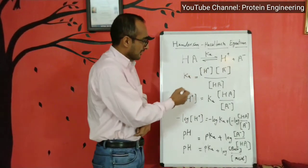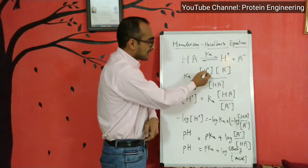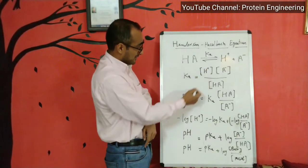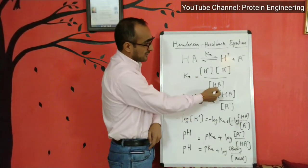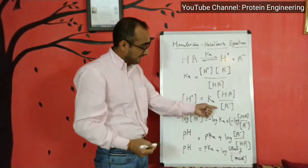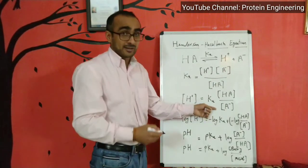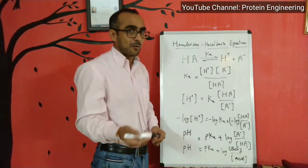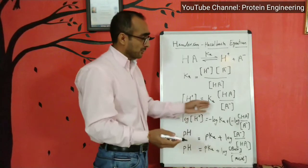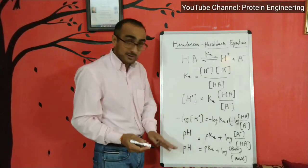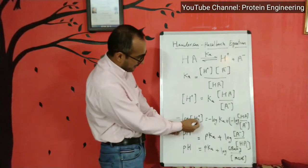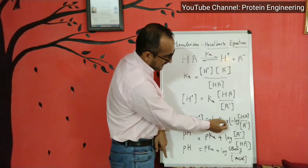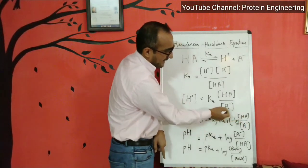From this equilibrium equation, the H⁺ ion concentration can be calculated separately. H⁺ ion concentration equals KA times [HA] divided by [A⁻]. Because we have to relate this to pH, and pH equals minus log of H⁺ ion concentration, we multiply both sides with minus log base 10. So minus log [H⁺] equals minus log KA plus minus log [HA]/[A⁻].